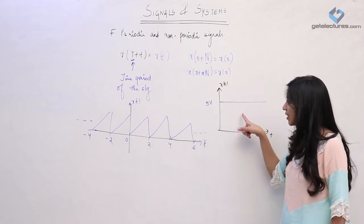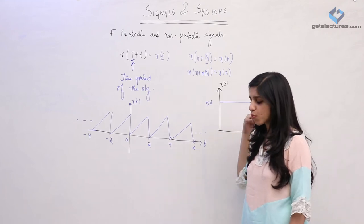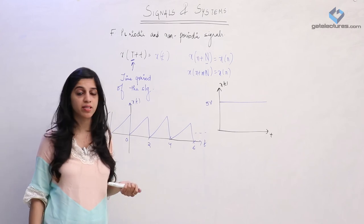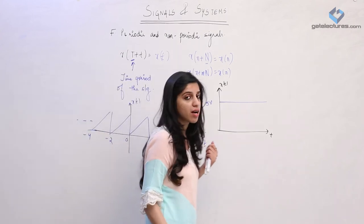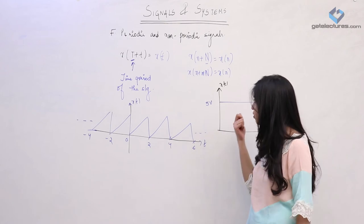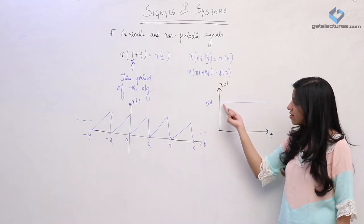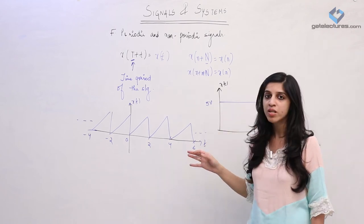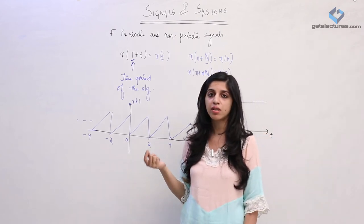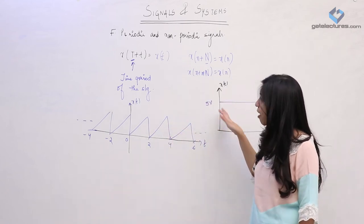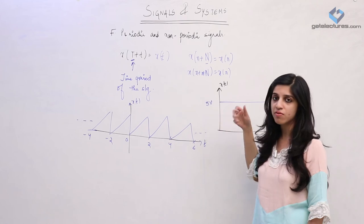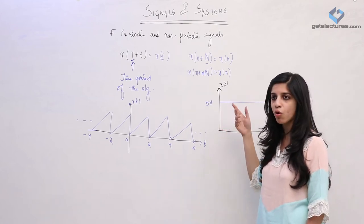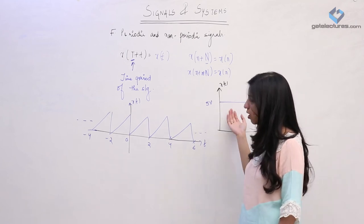A DC signal is not a periodic signal - this question is asked frequently. A DC signal is not periodic because you cannot define a shortest time interval after which the signal repeats its value. It has the same value all over time, so we cannot introduce one single unique fundamental period. Since we cannot define a fundamental time period, we say the DC signal is aperiodic or non-periodic.